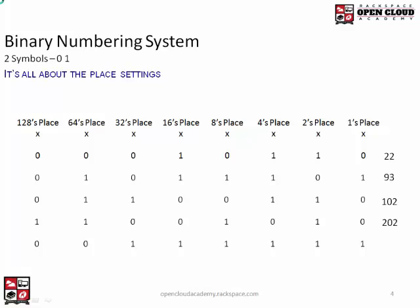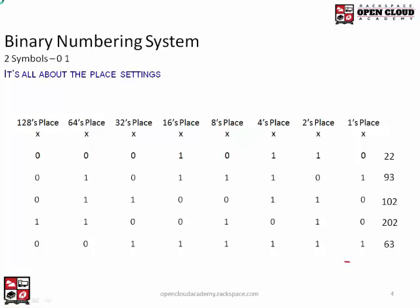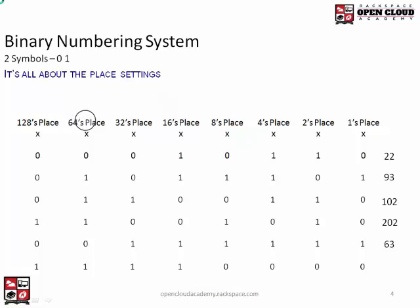Next one: strings of ones — it's always one less than the next place setting, so this has to be 63. Last example: we add backwards. 128 plus 64 is 192, plus 32 is 224, plus 16 is 240. Adding backwards is a very important skill that we'll cover in more detail in the next video. So this equals 240.